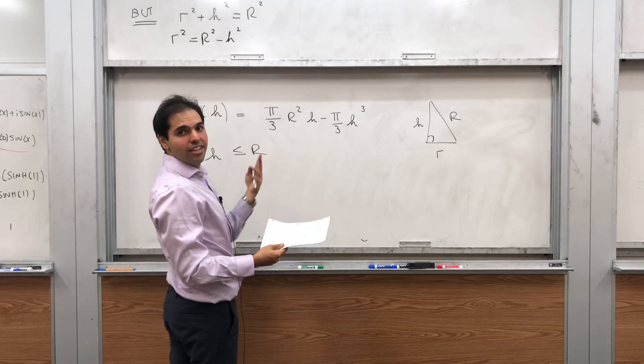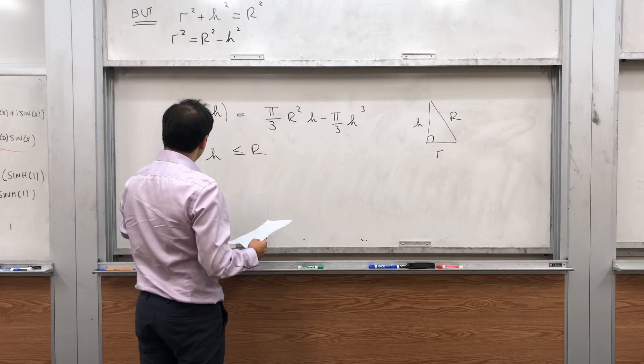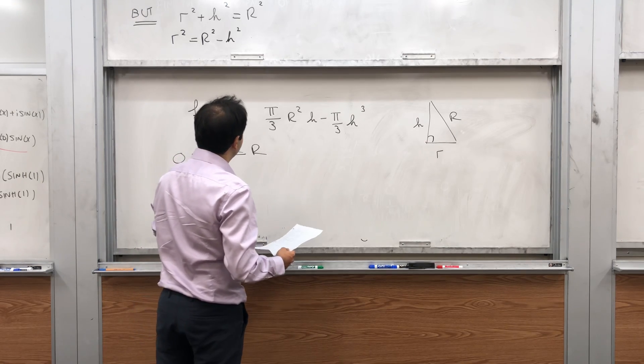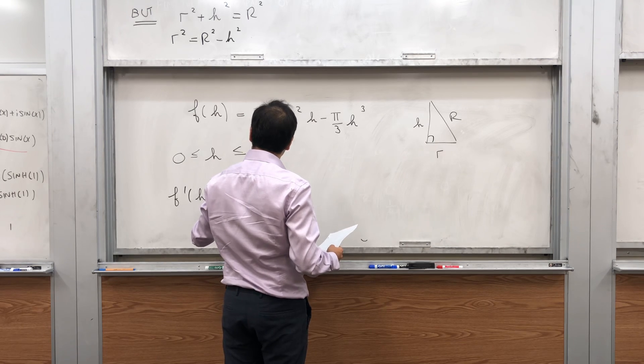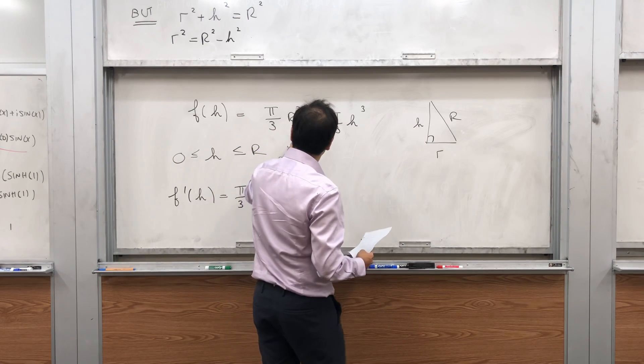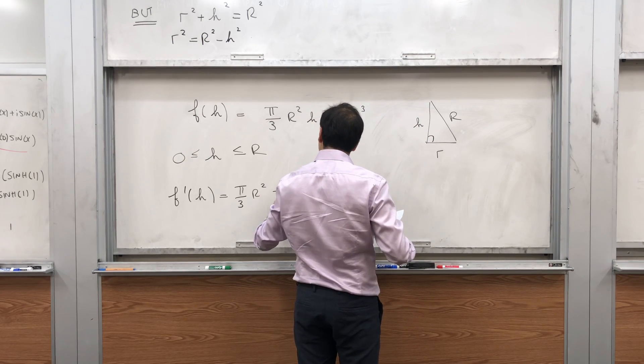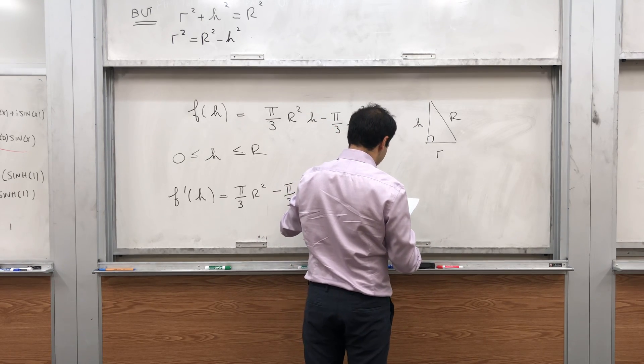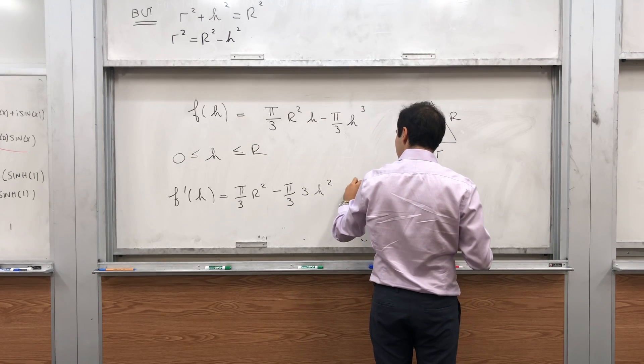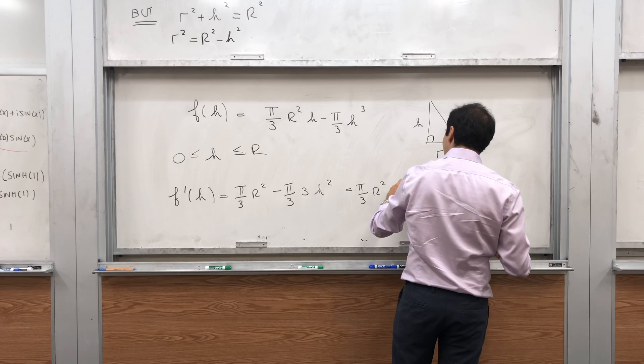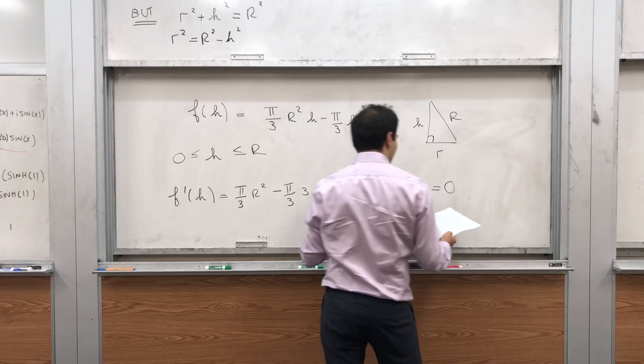The next thing is, let's find the max min. So we have to calculate the first derivative. So f prime of h becomes, this is a constant, pi over 3 r squared. The derivative of h is 1. And here, minus pi over 3, 3 h squared, which becomes pi over 3 r squared minus pi h squared.